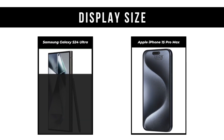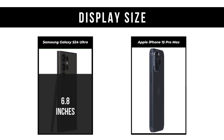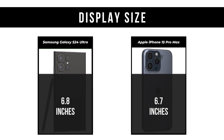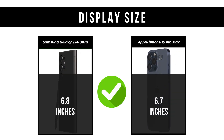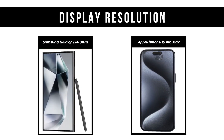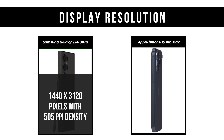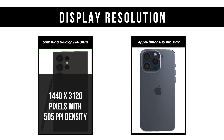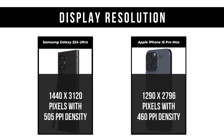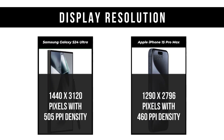Display Size: Samsung Galaxy S24 Ultra is 6.8 inches; Apple iPhone 15 Pro Max is 6.7 inches. Display Resolution: Samsung Galaxy S24 Ultra is 1440x3120 pixels with 505ppi density; Apple iPhone 15 Pro Max is 1290x2796 pixels with 460ppi density.